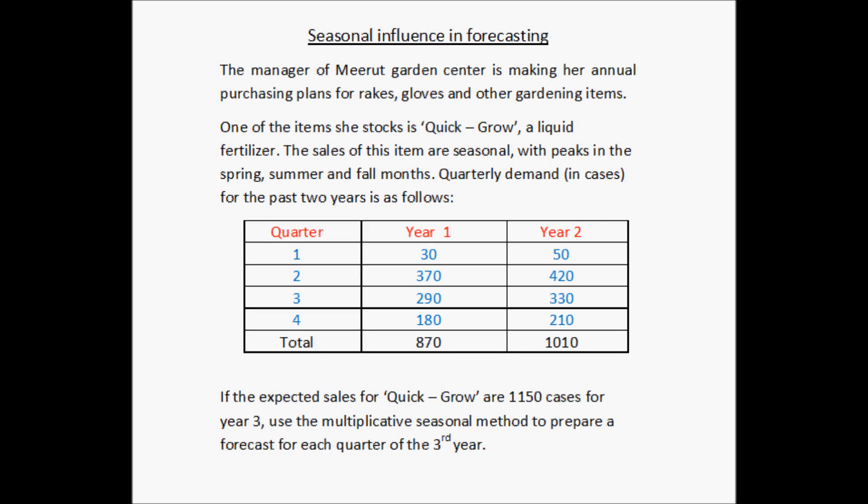Let us look at another example of seasonal influence in forecasting. The manager of Meret Garden Center is making her annual purchasing plans for rakes, gloves and other gardening items. Meret Garden Center is in the business of selling items used for gardening purposes such as rakes, gloves, fertilizer, etc. One of the items she stocks is Quick Grow, which is a liquid fertilizer. The sales of this item are seasonal with peaks in the spring, summer and fall months.